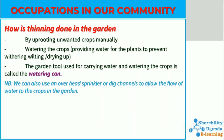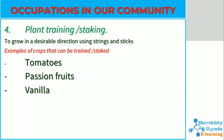The garden tool used for watering the crops is called a watering can. Another method used to care for our crops is plant training or staking. This is a method practiced to enable our plants to grow in the direction that we desire or a direction wanted by the farmer. Examples of crops that are trained or staked include tomatoes, passion fruits, and vanilla, among others.